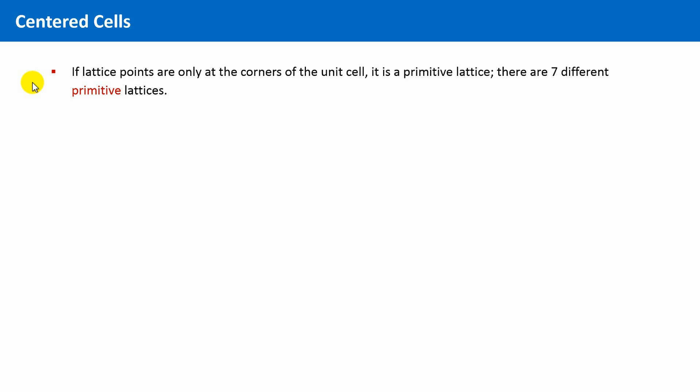In the last unit we learned that it can be advantageous if we add additional lattice points to the unit cell. The symmetry, of course, will not change, but the metric of the unit cell changes towards a better representation of the underlying symmetry of the lattice.